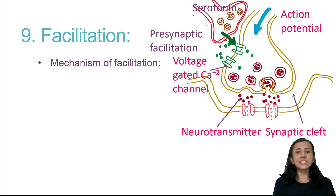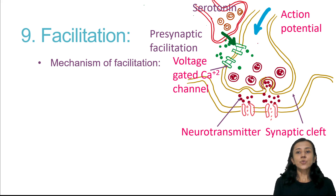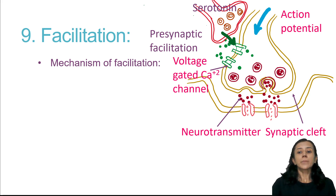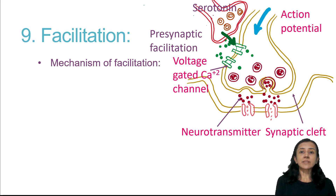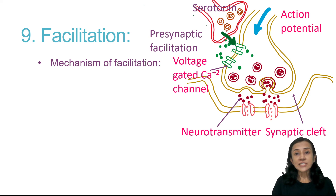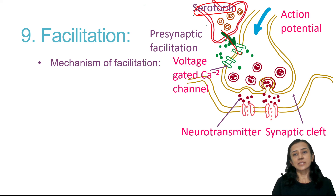Facilitation means when a presynaptic axon is stimulated with several consecutive stimuli, the postsynaptic response is larger than the previous one. This is because successive stimuli cause large amounts of neurotransmitter to be secreted. Sometimes when a facilitator terminal is stimulated along with it, it releases serotonin, which has an additive effect and increases neurotransmitter release.